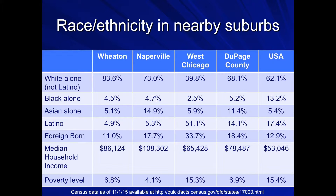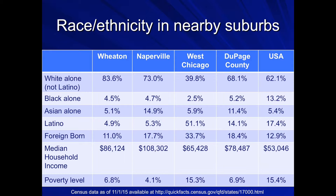Looking at current demographic data, Wheaton is about 84% white, compared to 73% in Naperville, 40% in West Chicago, 68% in DuPage County, and 62% in the US. Wheaton's black population isn't too different from Naperville or DuPage County. The Asian population is lower than Naperville and DuPage County. Wheaton is definitely lower on Latinos. It's not the wealthiest suburb — there are much wealthier suburbs in the Chicago area — but it does have a fairly low poverty rate of 6.8%, compared to the national average of 15.4%.